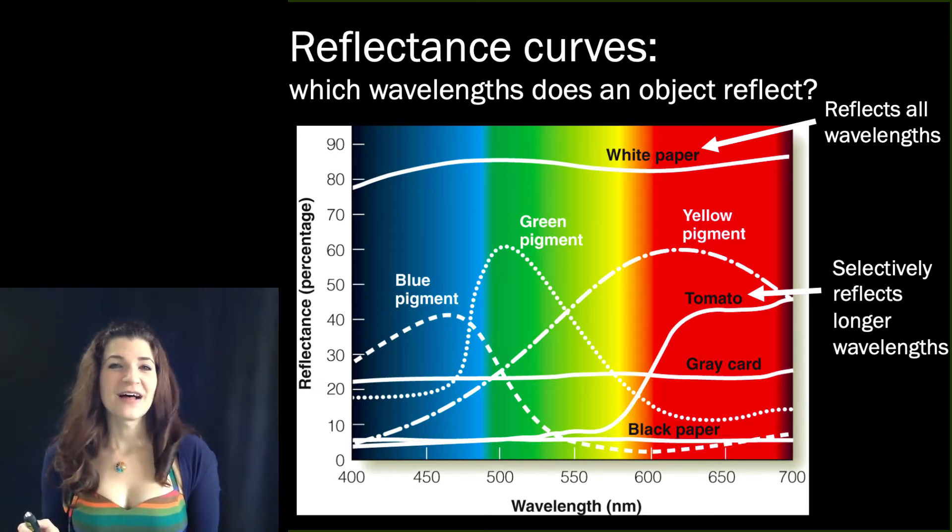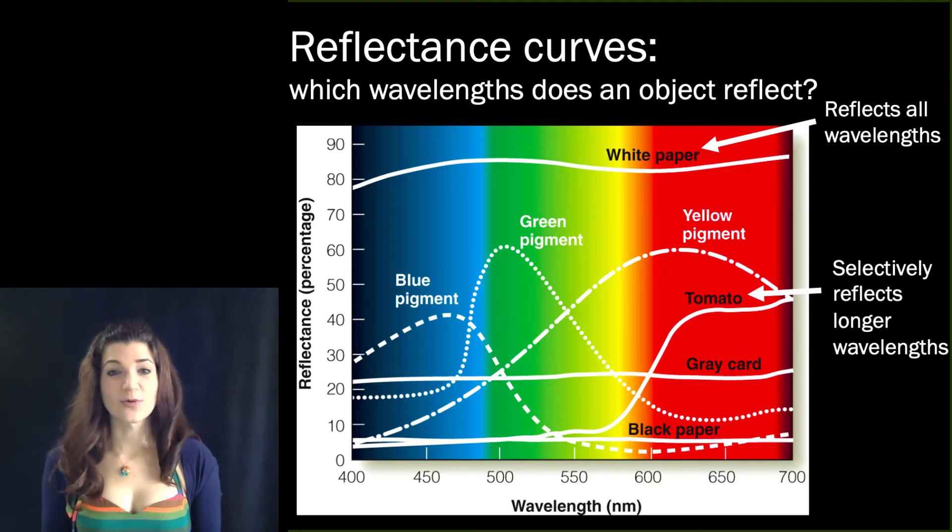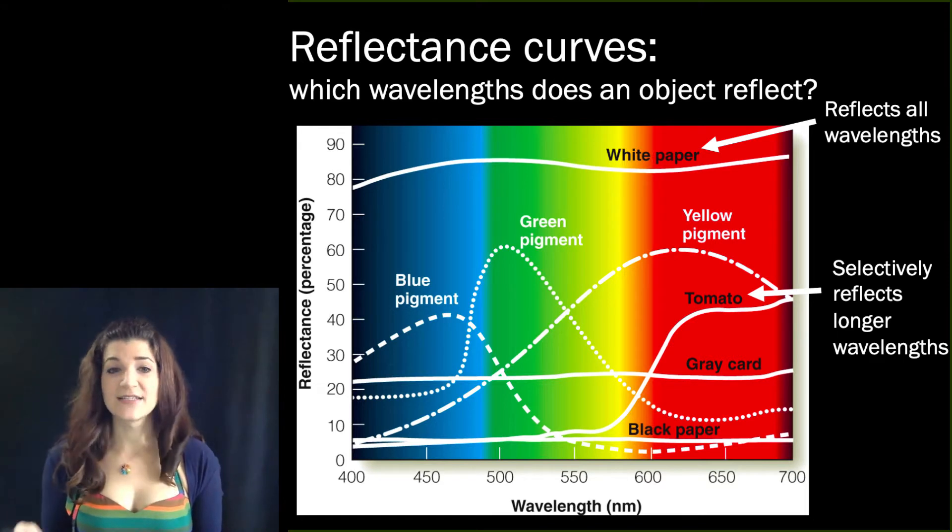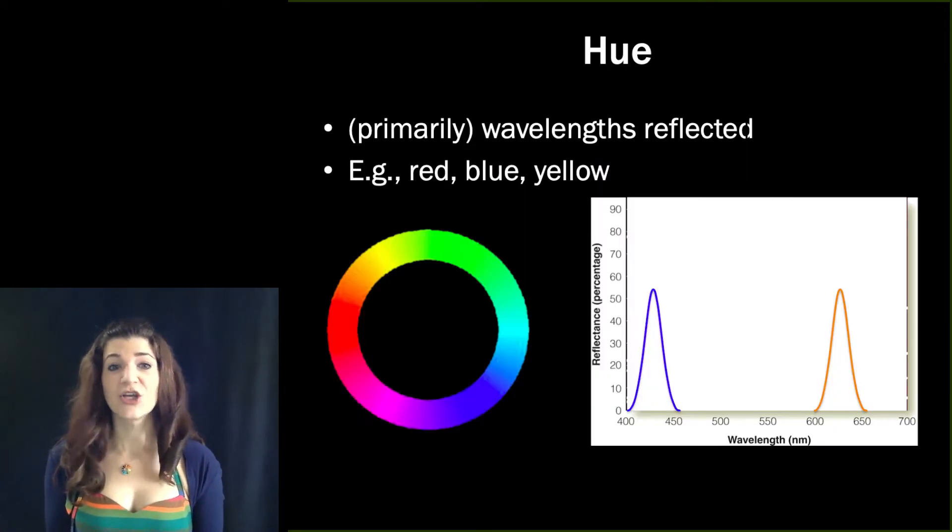So the wavelengths of light that an object reflects or a light source produces is a major influence on the colors that we perceive. And we refer to that dimension that's associated with wavelengths as hue.